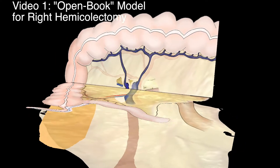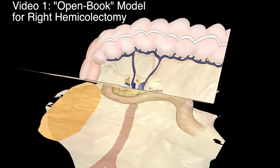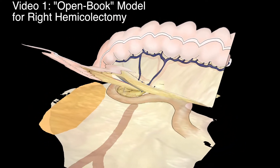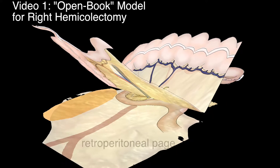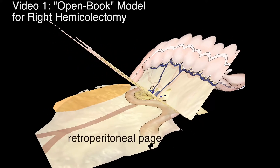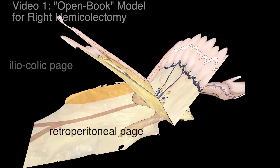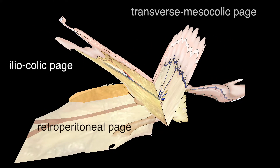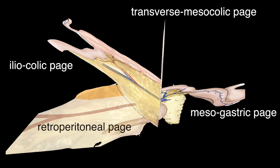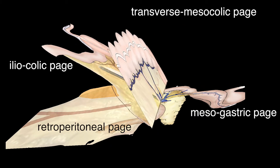This video describes the open book model for right hemicolectomy. In this model, the retroperitoneal page, the iliocolic page, the transverse mesocolic page, and the mesogastric page are described.